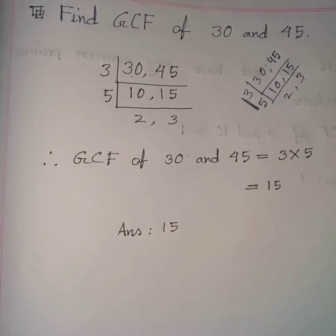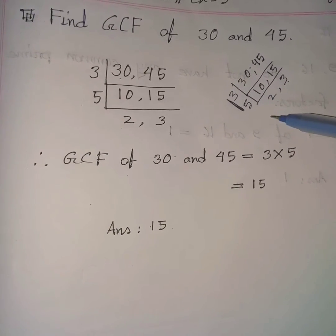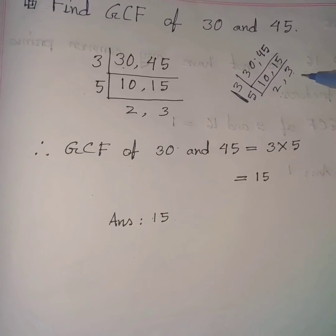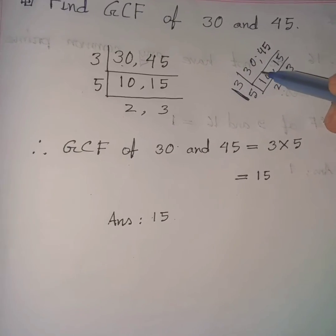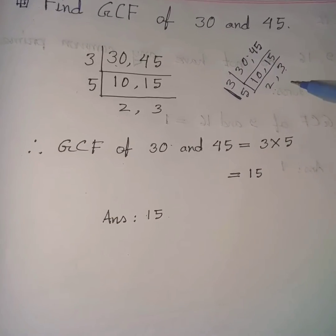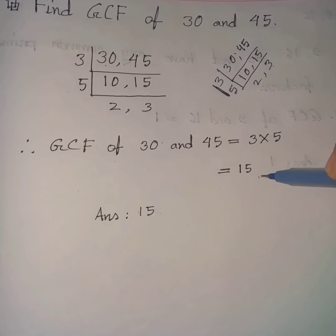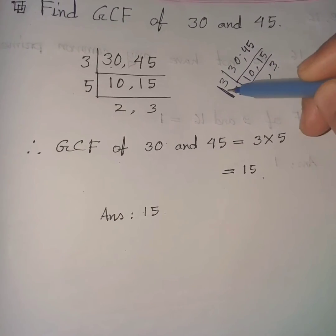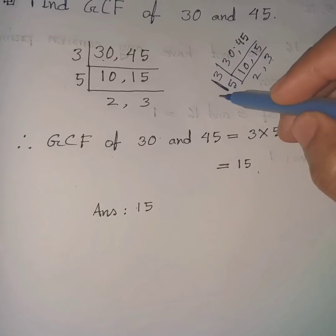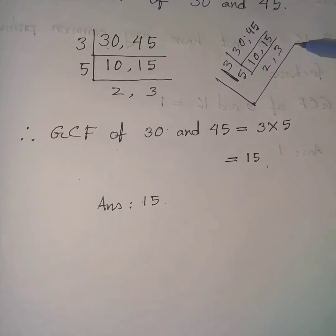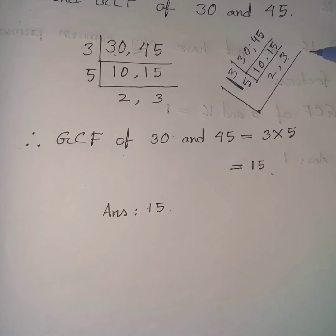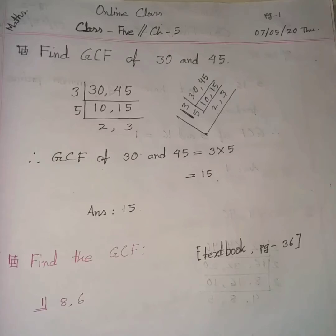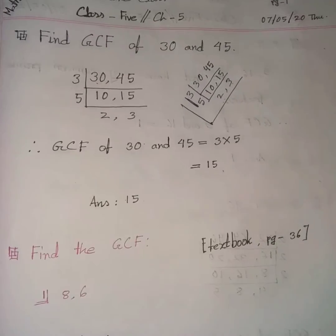Notice that for LCM we multiply all the factors: 3, 5, 2, 3, and the LCM of 30 and 45 is 90. But the GCF of 30 and 45 is 15. For GCF we multiply only the common factors; for LCM we multiply all the factors.